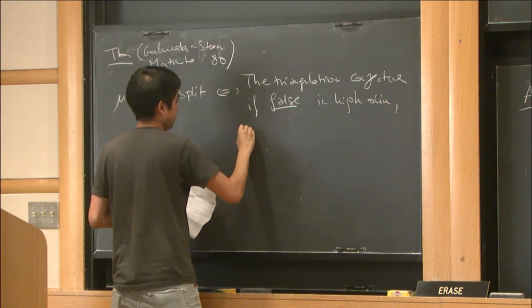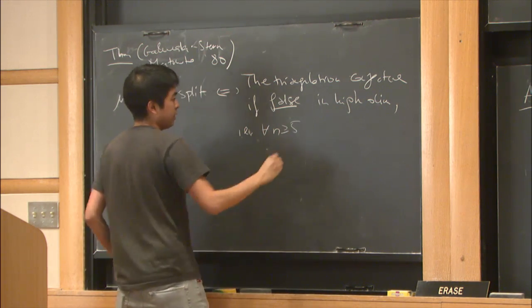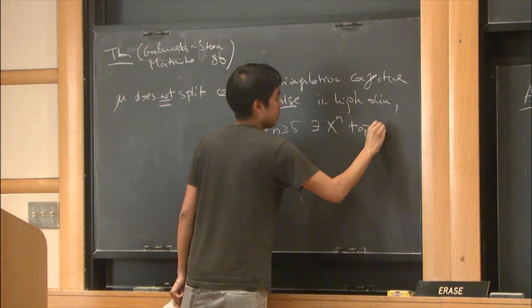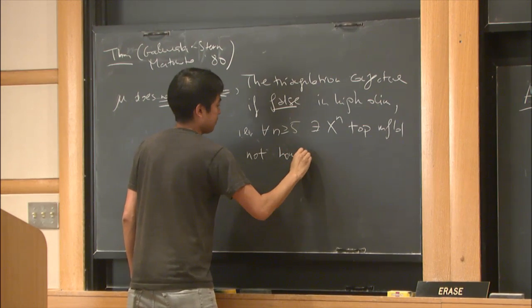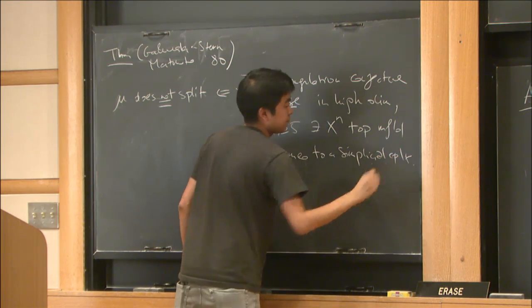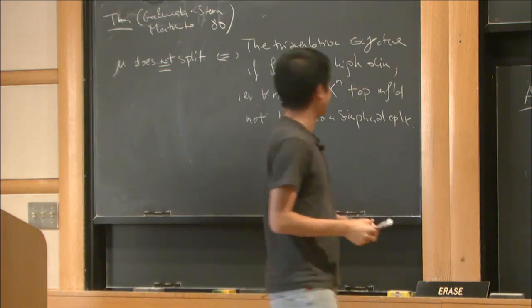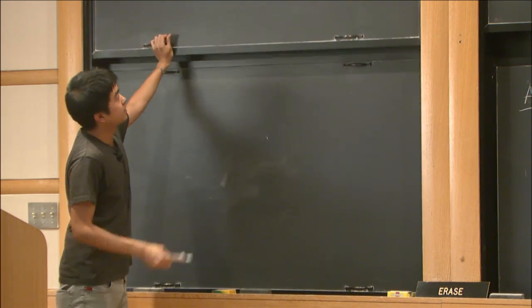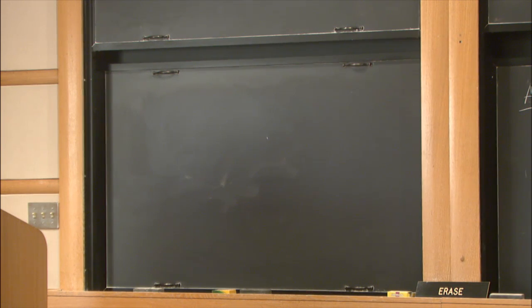For every n bigger or equal than 5, there exists a topological manifold not homeomorphic to a simplicial complex. That's a very interesting question - this very general basic fact about manifolds in every dimension boils down to studying a homomorphism defined in dimensions 3+1.